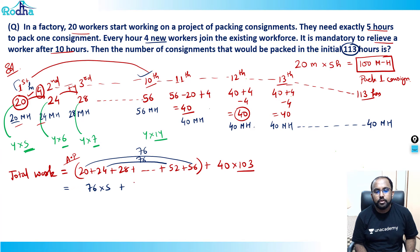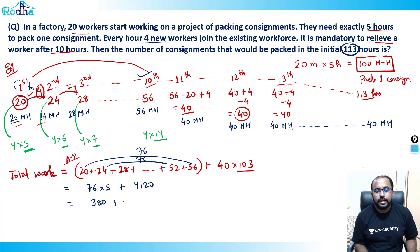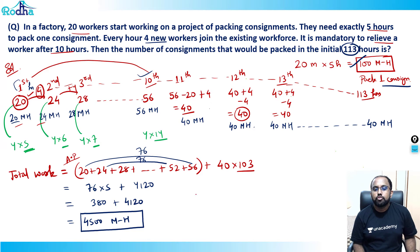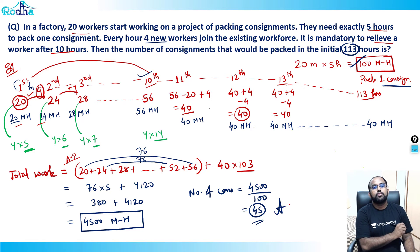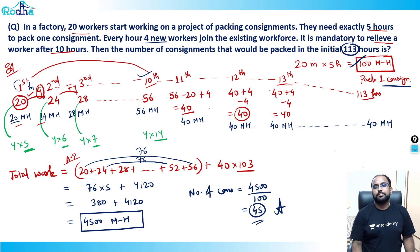For hours 11–113, work done = 40 × 103 = 4,120 man-hours. Total work = 380 + 4,120 = 4,500 man-hours. Since one consignment requires 100 man-hours, the number of consignments = 4,500 ÷ 100 = 45. So the answer is 45 consignments. Hope you learned a good concept from this time and work question!